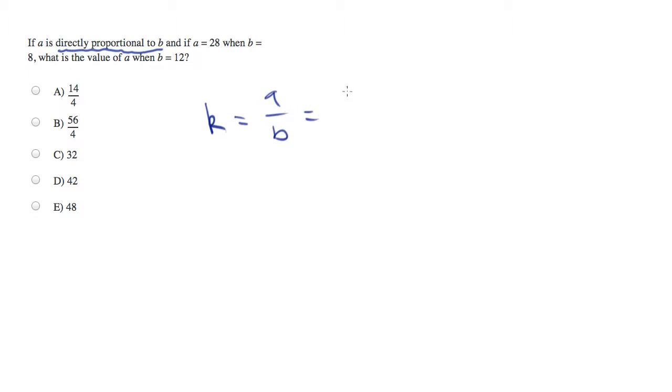And they also tell us if A is 28 when B is 8, so all of this was given. What is the value of A? So they're asking us to find A, also given, was B equals 12.